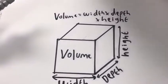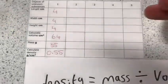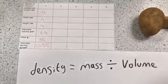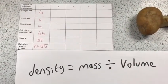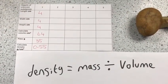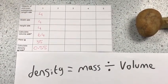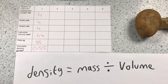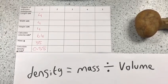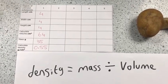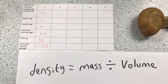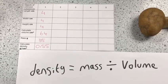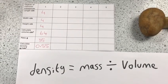And here is the one we did earlier. As you can see, when we multiply our length, width, and height together, we get our volume — in this case, 64 centimetres cubed. We also have our mass from our balance. If we divide the mass by the volume, it will give us the density — in this case, 0.55 grams per centimetres cubed.